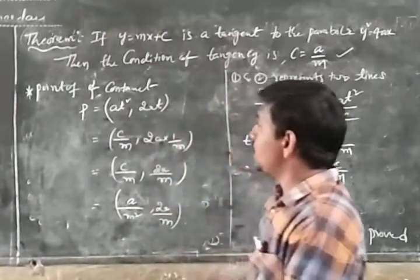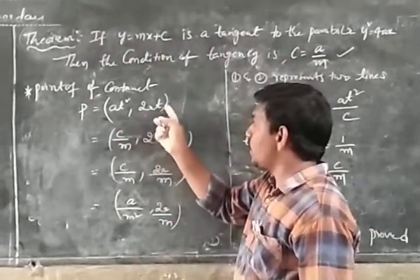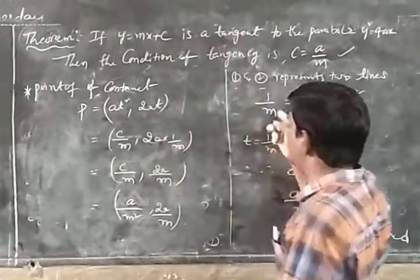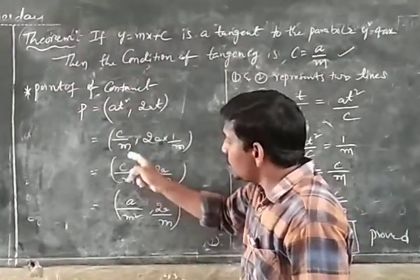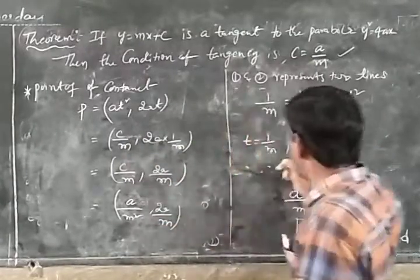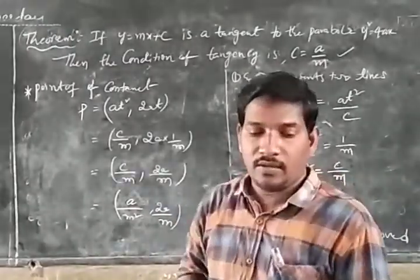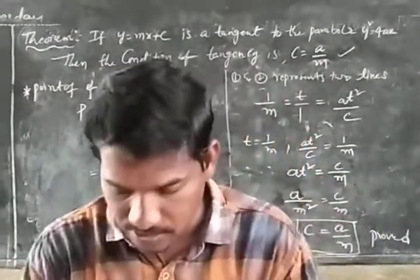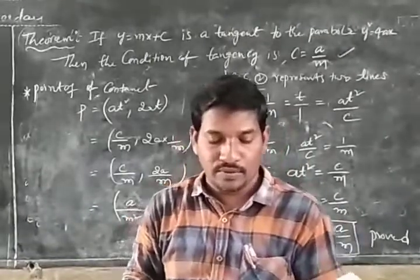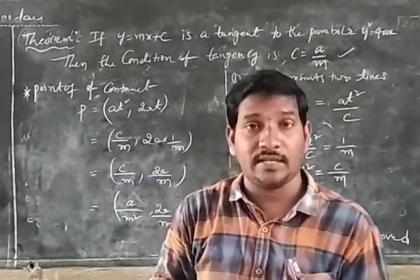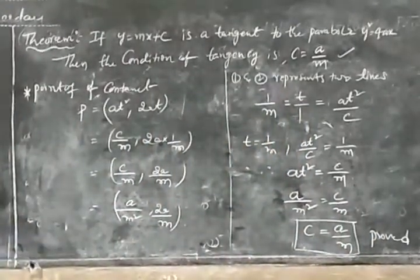So the point of contact is (a/m², 2a/m). This concludes today's class. Some more theorems will be discussed tomorrow.